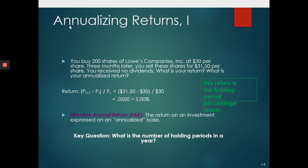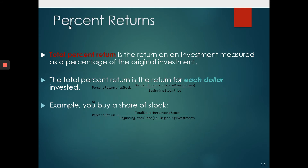The percentage return is the dividend income received plus the capital gain, divided by the beginning stock price. In the example I was giving earlier, it is simply the $2 dividend income plus $25 capital gain, divided by the beginning stock price which is $100.